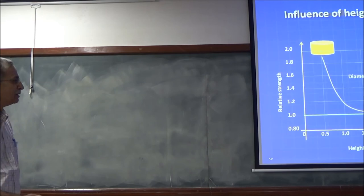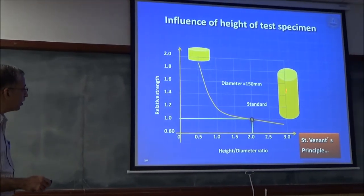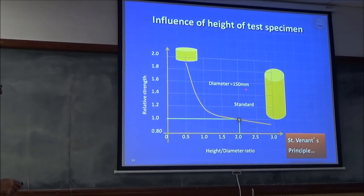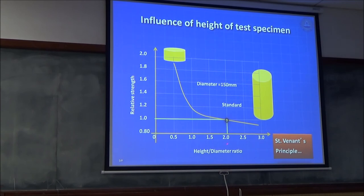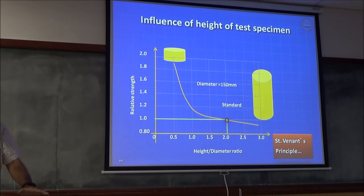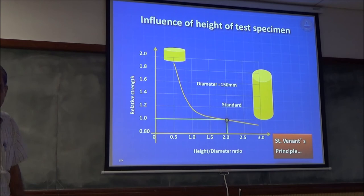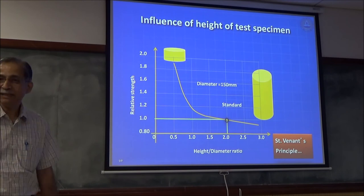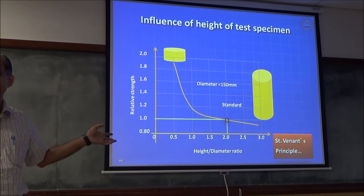Now look at the effect of height-to-diameter ratio, keeping diameter at 150 mm. The standard is height-to-diameter ratio of 2. If the ratio is small — like 1 — strength shoots up enormously, about 80% more. If you increase the ratio to 3, it drops slightly, to about 90% of the standard. This is another interesting phenomenon.